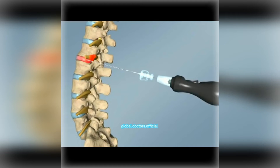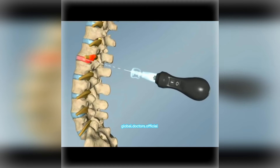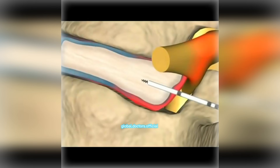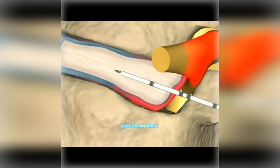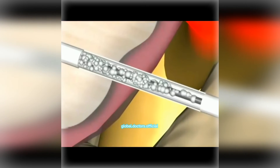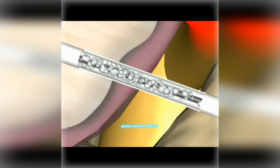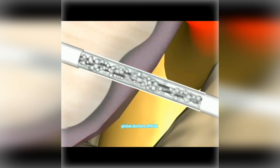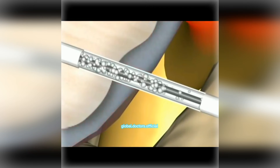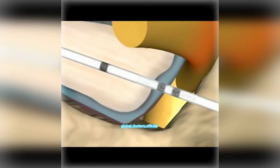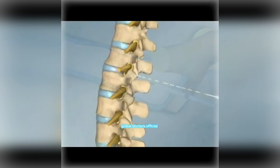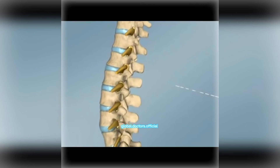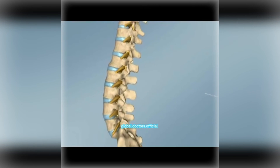a tiny puncture is made into the annulus of the affected disc, and the striker decompressor discectomy probe is introduced. The excess nucleus material is drawn up into the decompressor, reducing the size of the bulge and relieving painful pressure from the surrounding nerves.